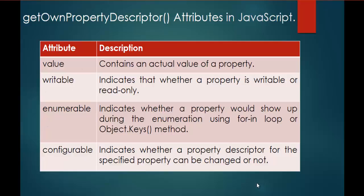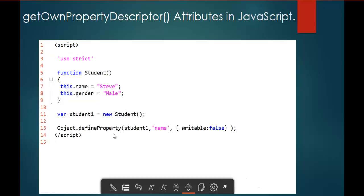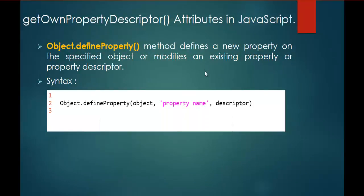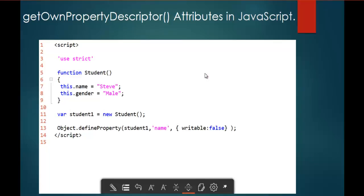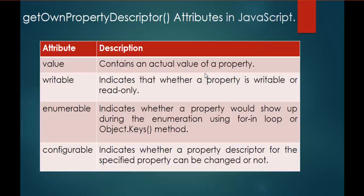Without wasting much time, let me jump into the next slide. Here comes a code snippet in strict mode. I am having a function Student with two properties, name and gender, with values Steve and Male. I am creating an object of this function called Student1. I am going to introduce a new method called Define Property, which helps you define a new property for an object and also modify an existing property or property descriptor. In this session, we are going to understand mainly about these four attributes: Value, Writable, Enumerable, and Configurable.